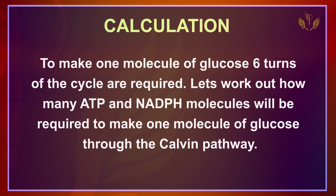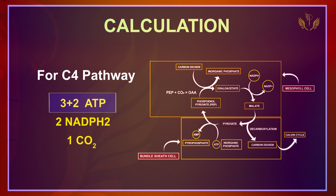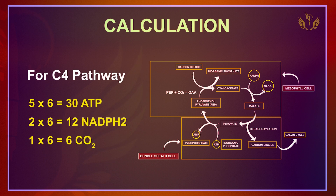Now for the C4 ATP calculation: same as C3 (3, 2, 1) but add 2 more to the ATP, giving 5 ATP, 2 NADPH, and 1 CO2 per turn. Multiplying by 6 for one glucose: 5×6 = 30 ATP, 2×6 = 12 NADPH, 1×6 = 6 CO2.